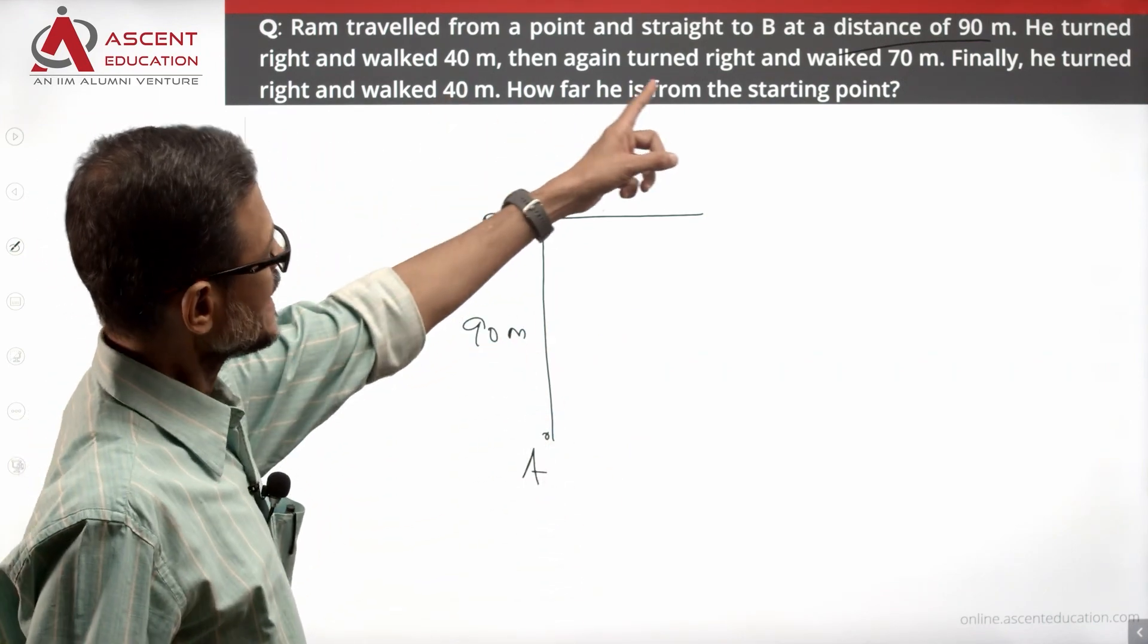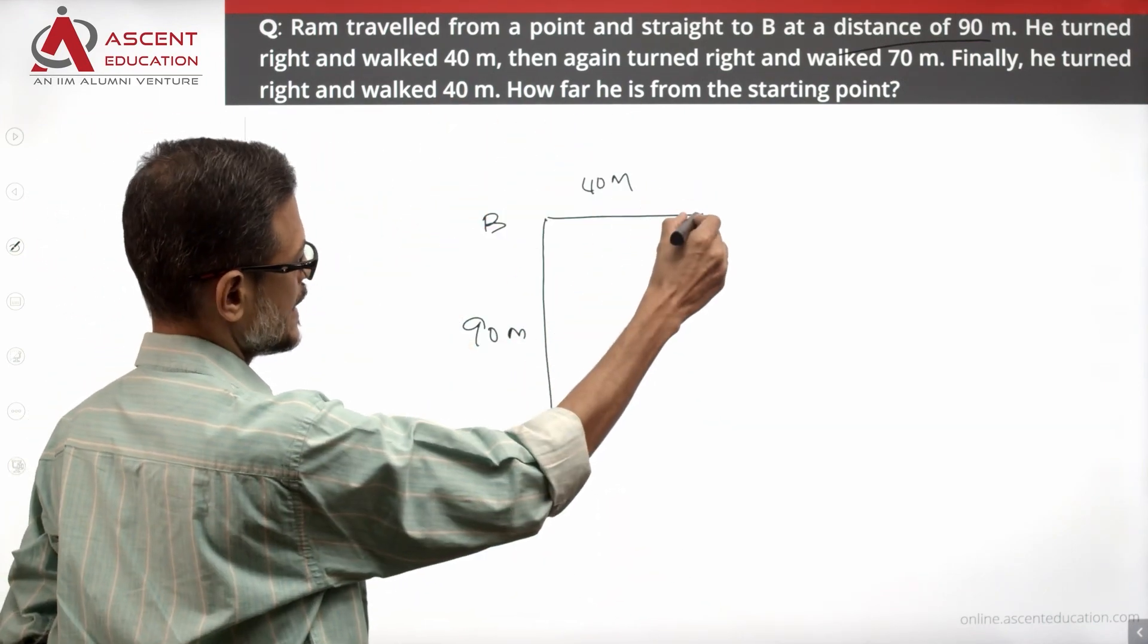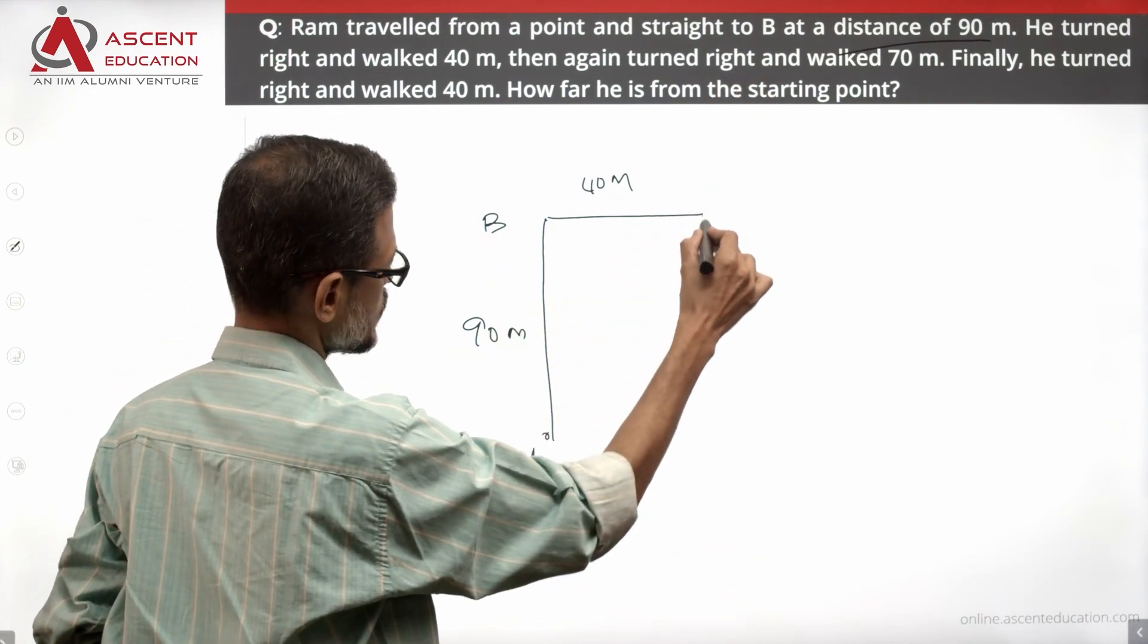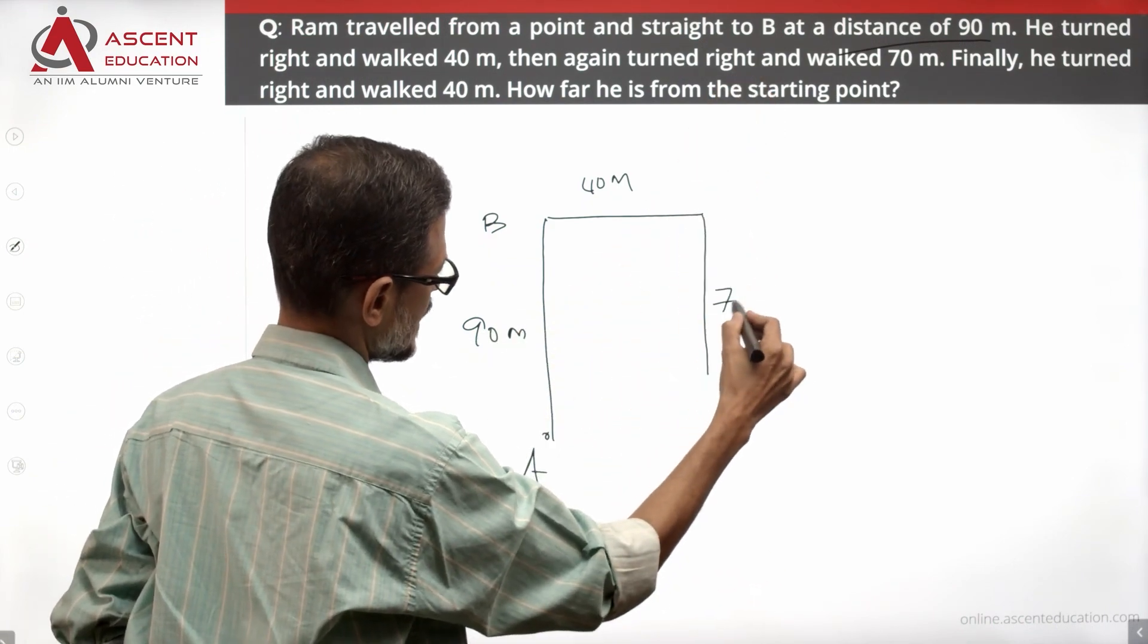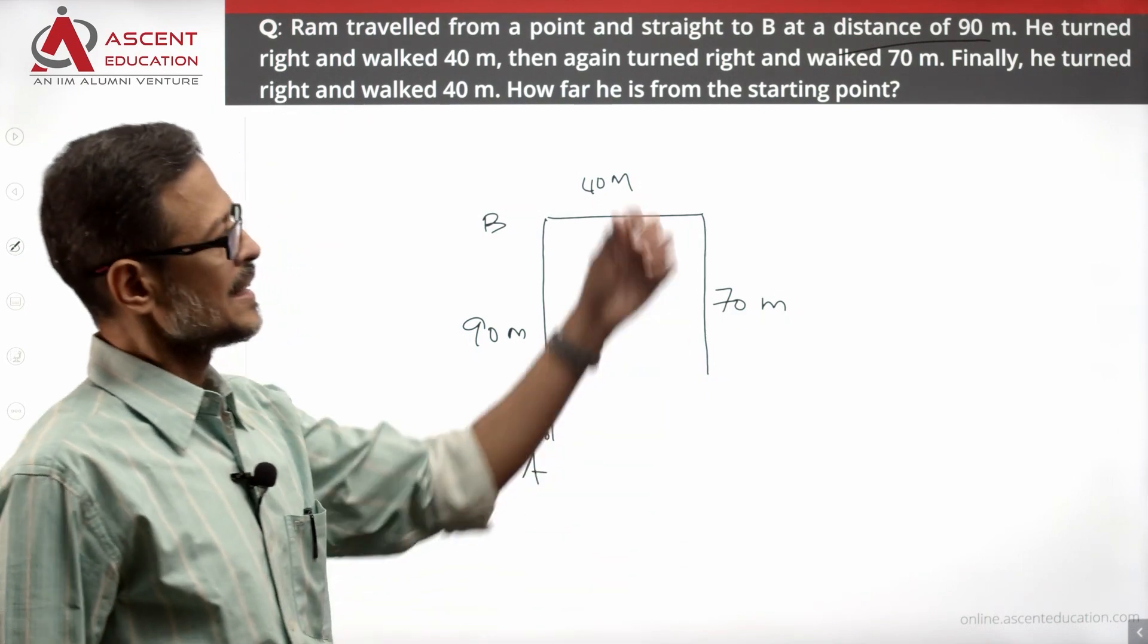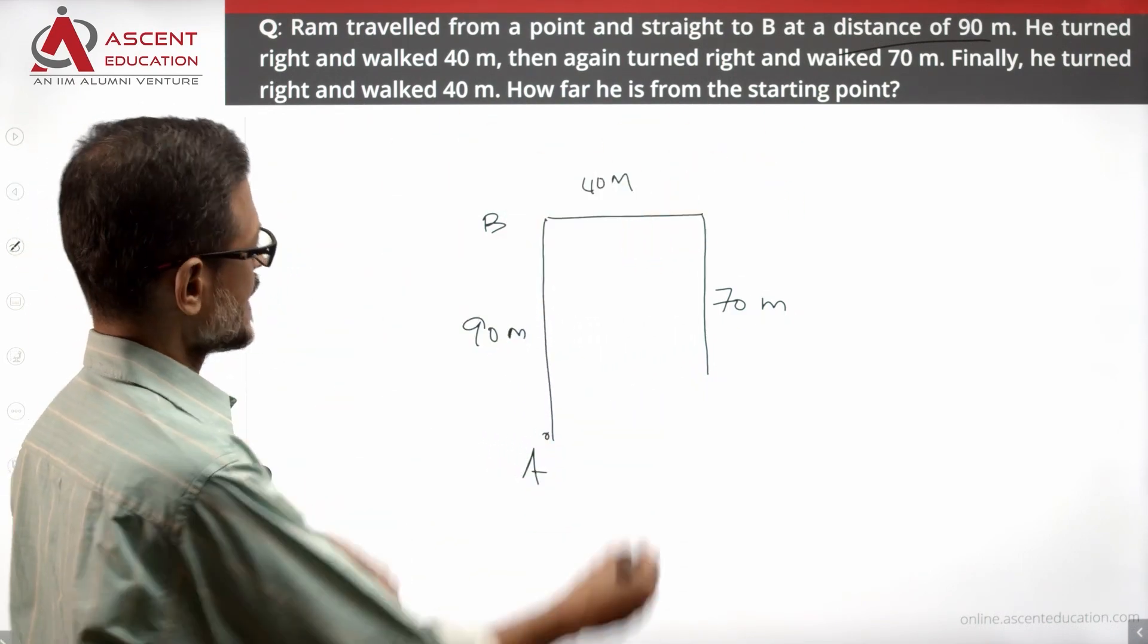Then again turned right. So here he is going to turn right and walked 70 meters. Here he is turned right and walked 70 meters. Last turn, finally he turned right.